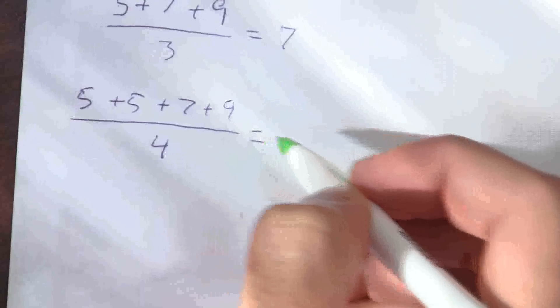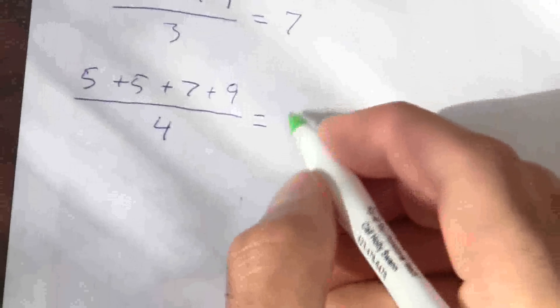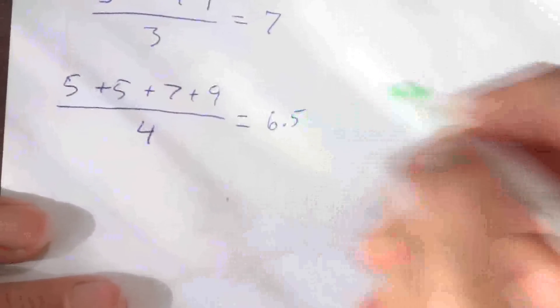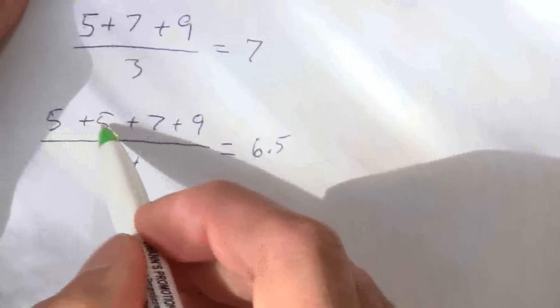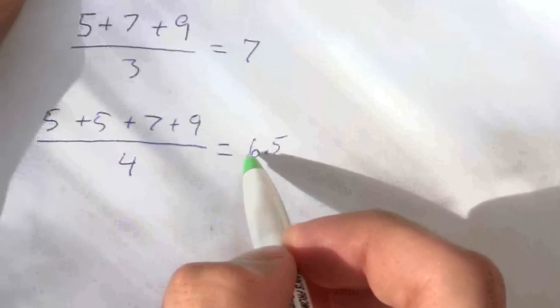And what I'll end up with here, I have 26 divided by 4 and that will give me 6.5. So you see when I put in another 5 it lowers my average a little bit.